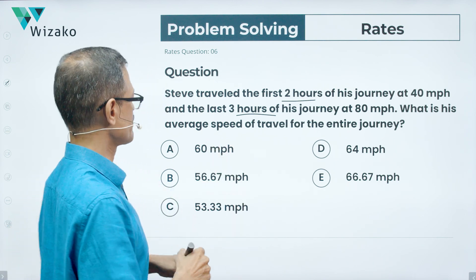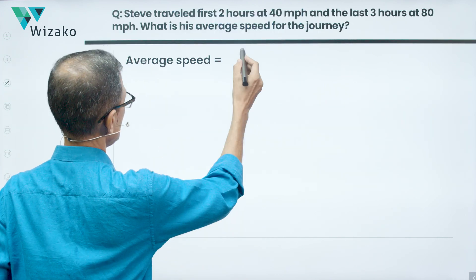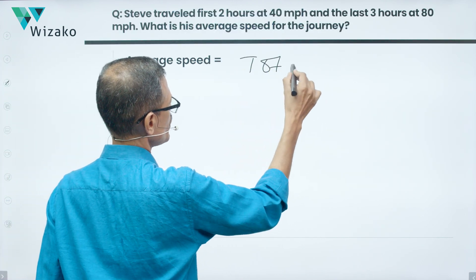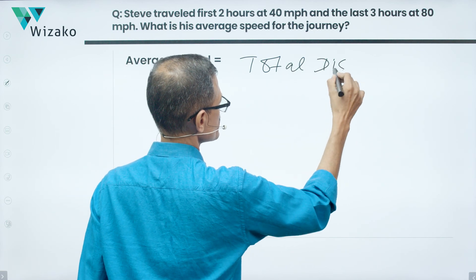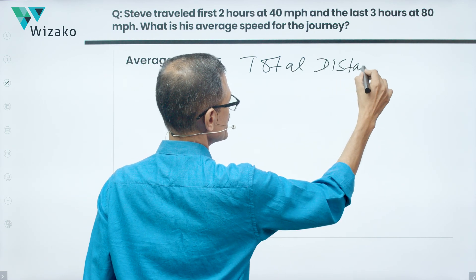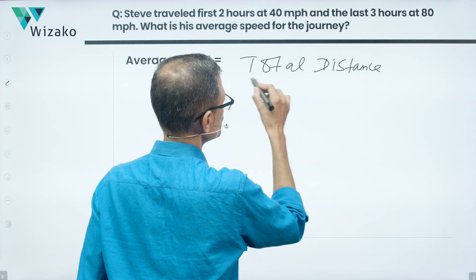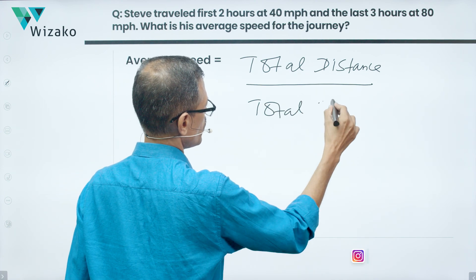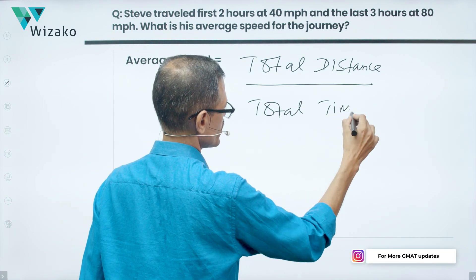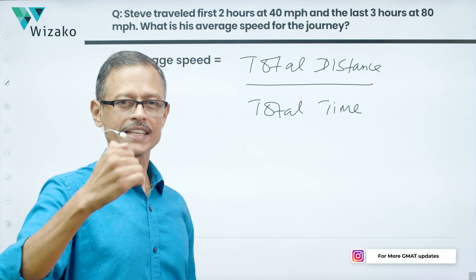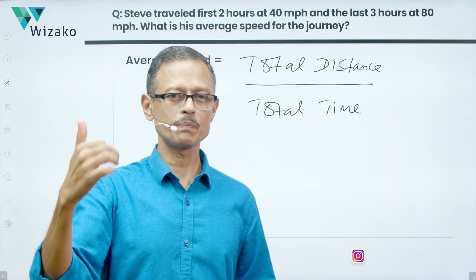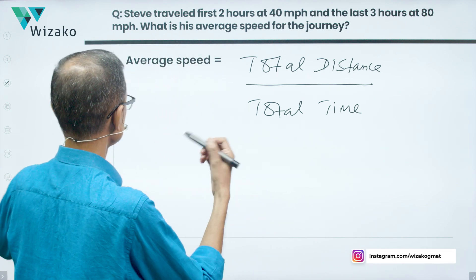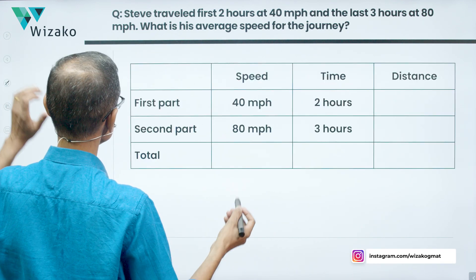Extremely simple question. How do you compute average speed? Average speed is computed using this formula, which is total distance travelled divided by total time taken to travel that distance. So what we are going to do is set up a table with first part, second part, time taken, and speed at which he has travelled. We'll find out the distances — that's the first step.